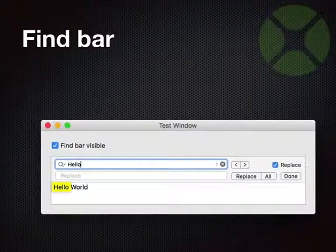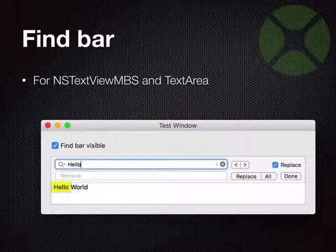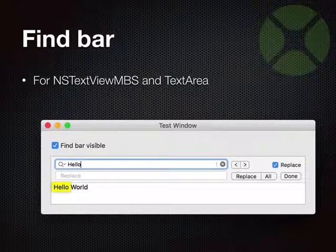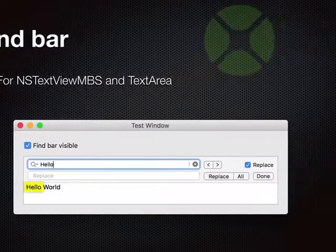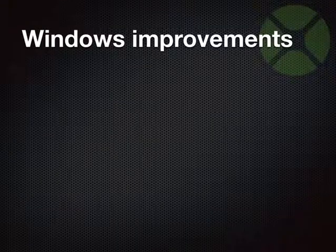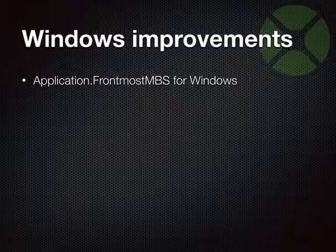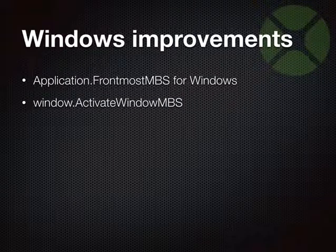We have classes for the find bar — a macOS feature for text areas and text views. You can show the find bar and allow users to search and replace within a text area. That's a very convenient feature, worth enabling for your users. We also have improvements for Windows — the frontmost property now works for windows so you can bring all your windows to the front. There is also an activate window function to bring one window to the front.